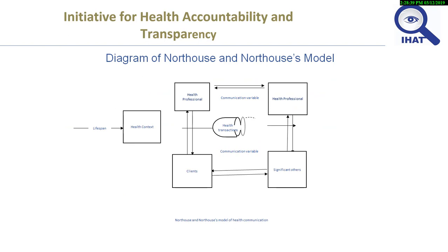This diagram clearly shows how the model works. We have the levels of interaction: professional to professional, professional to clients, professional to significant others, and clients to significant others. The health context has been mentioned, and you can see the health transactions in the middle. In all these cases, the communication variable is constant.